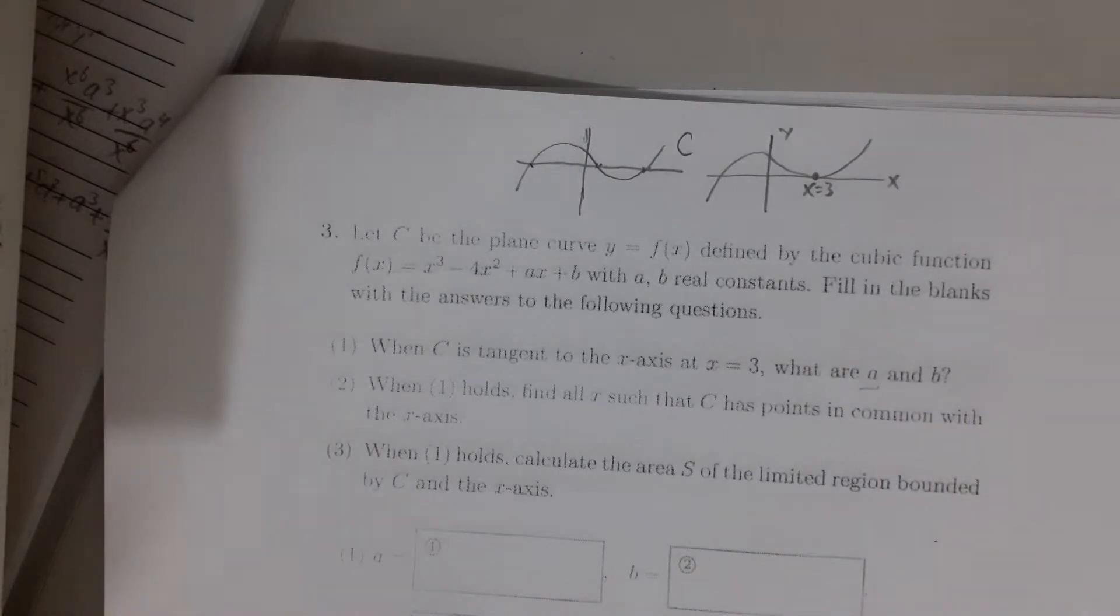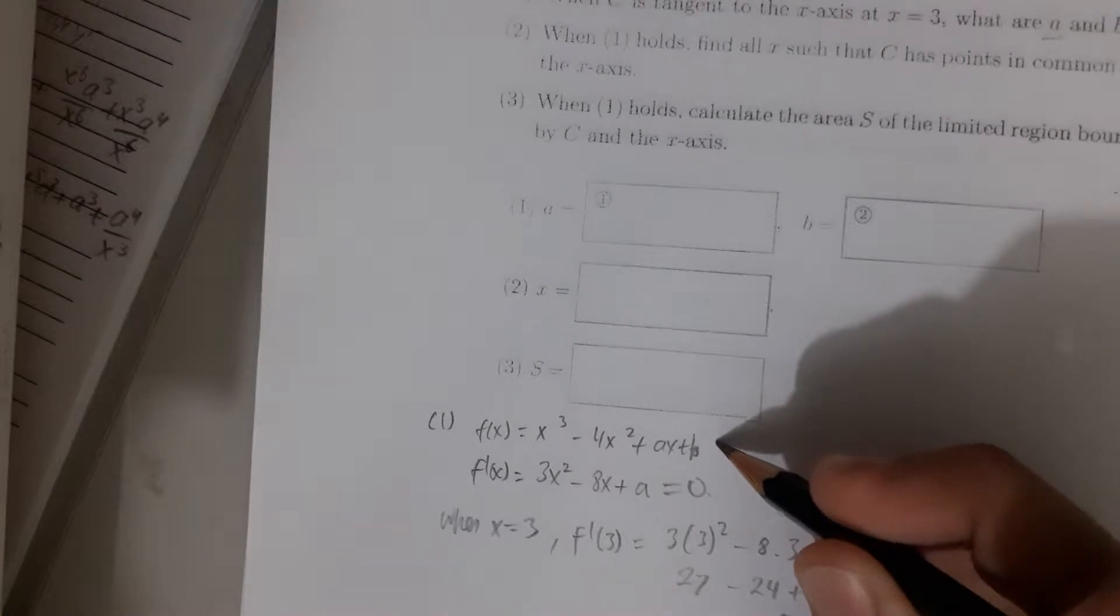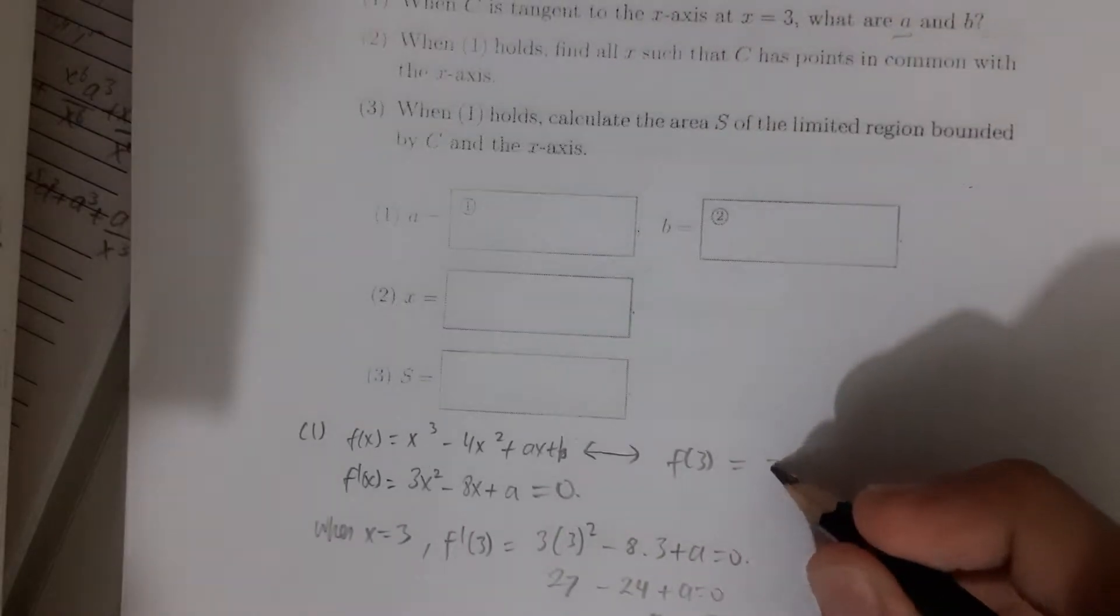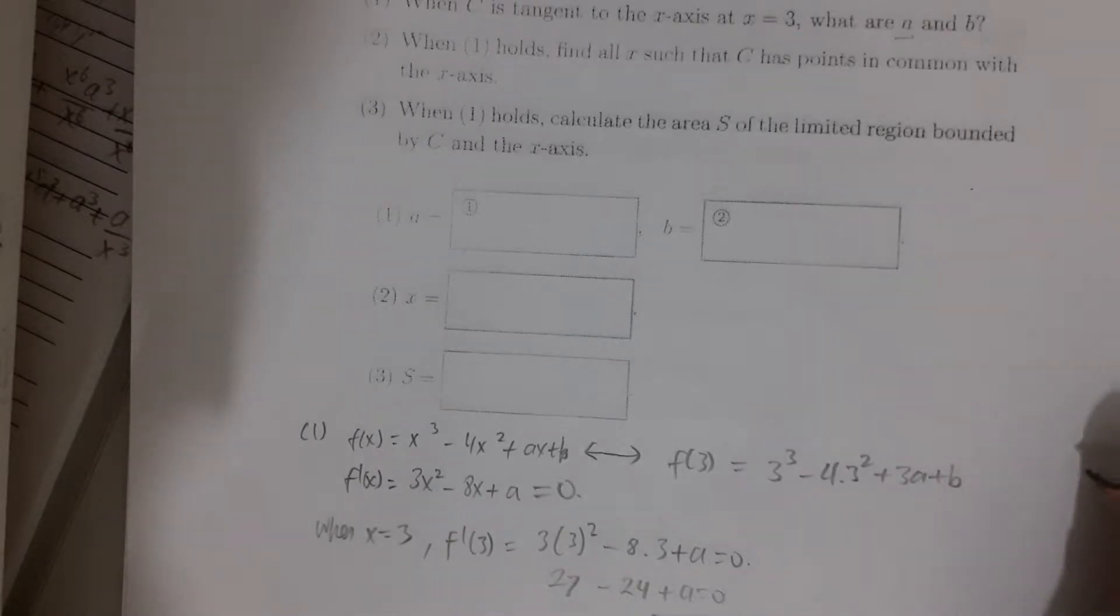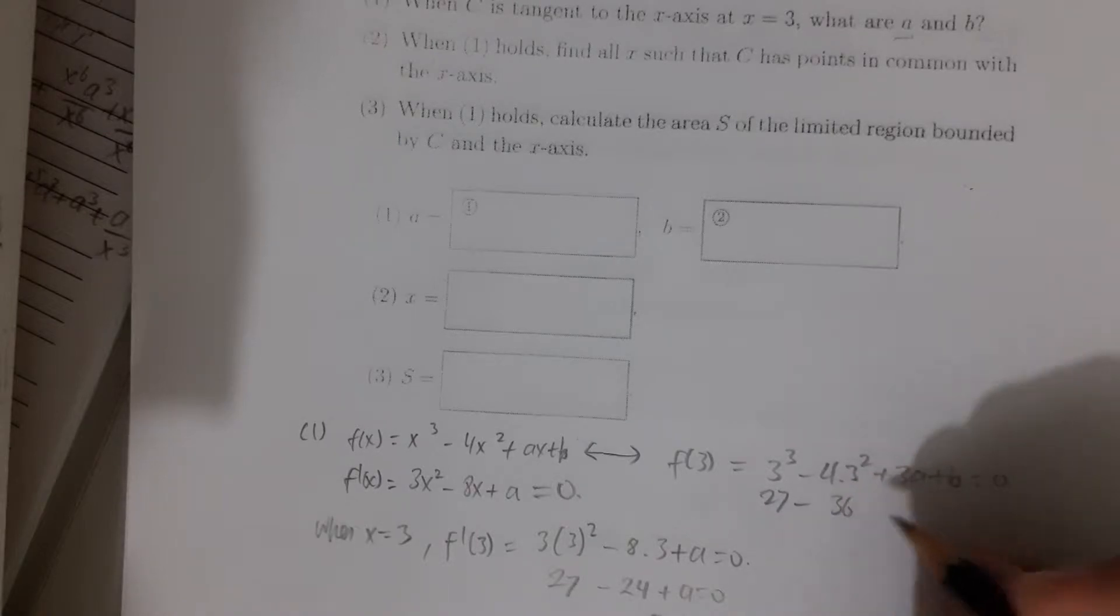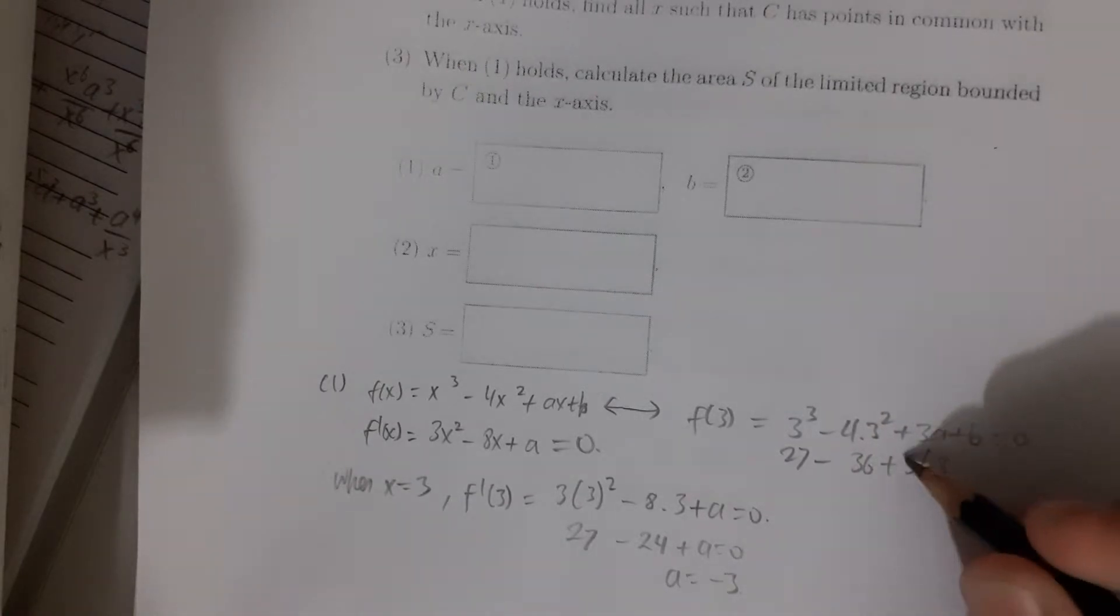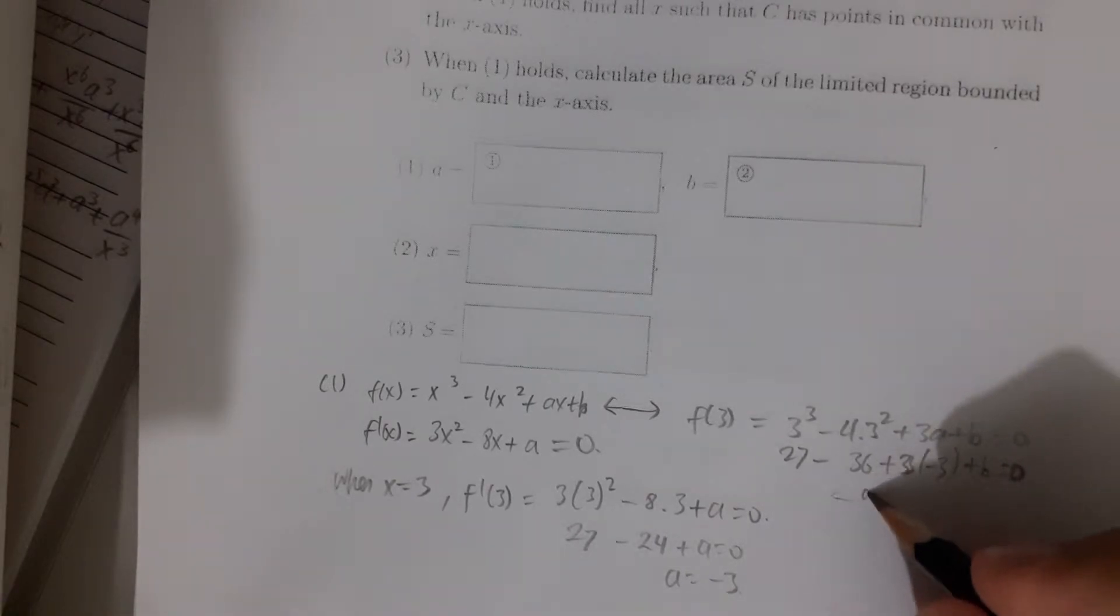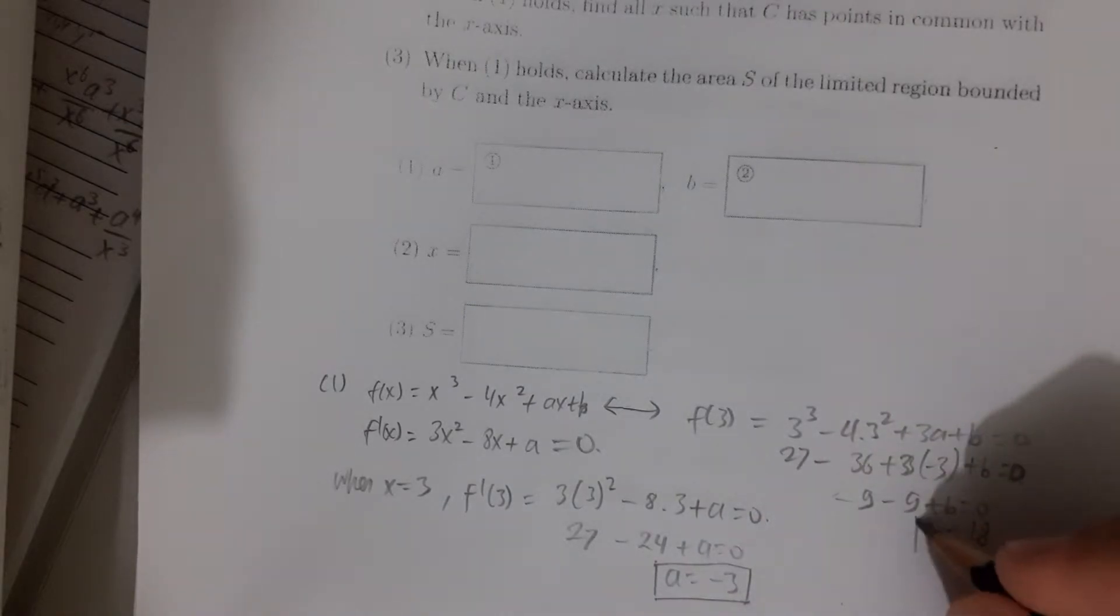Now we want to find b. To find b, we actually just put 3 into this function right here. So it becomes f(3) equals 3³ minus 4 times 3² plus 3a plus b, and all of it is equal to 0. So that is 27 minus 4 times 9, which is 36 plus 3a. A is minus 3, and 3 times minus 3 plus b equals 0, so b is 18. Now we get problem 1: a is minus 3 and b is 18.